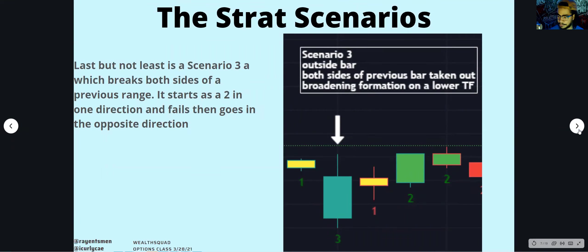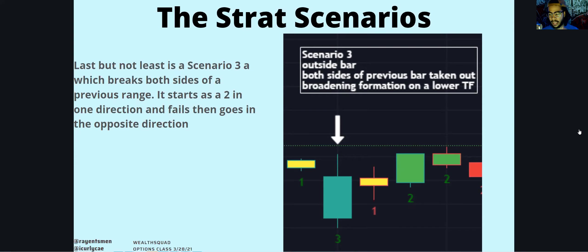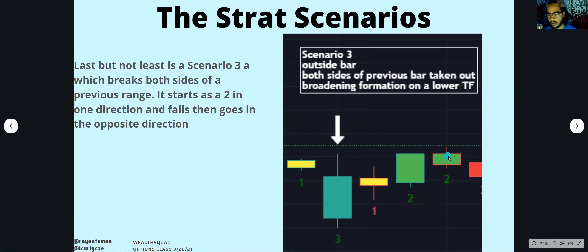So that's your three scenarios. A one is your consolidation candle — inside of the previous candle, just like a fist inside a hand. A two is directional: if it breaks the high, it's a two-up; if it breaks the low, it's a two-down, no matter the color. Those conflicting candles — like a red two-up or green two-down — often end up reversing, though not always. That gives you an idea of what's happening.